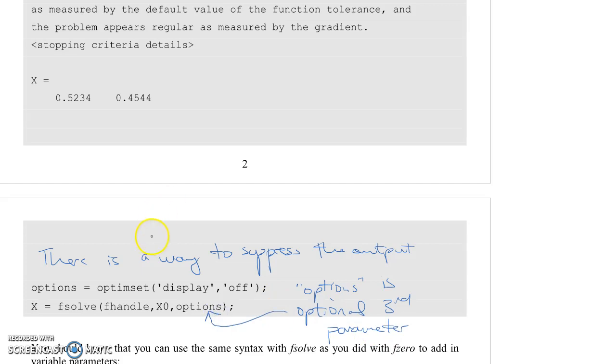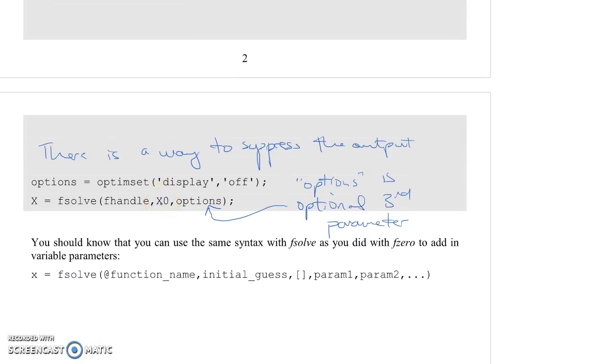Okay, last thing to note before the end of this screencast is if you've seen how you can call fzero with extra parameters, the way to do that in fsolve is exactly the same way. So you have your first variable which is your handle. You have your second which is your initial guess. You have your third here which is your options, and if you don't want to give it this command where you're actually giving it the variable options here you can put a little placeholder as little open brackets and here are all of your extra parameters.